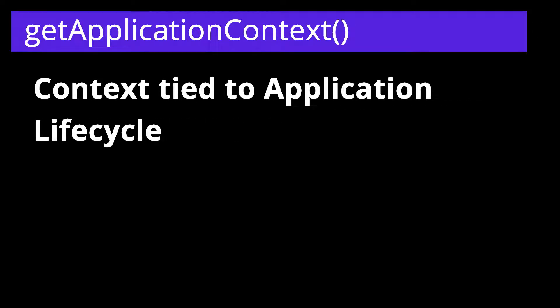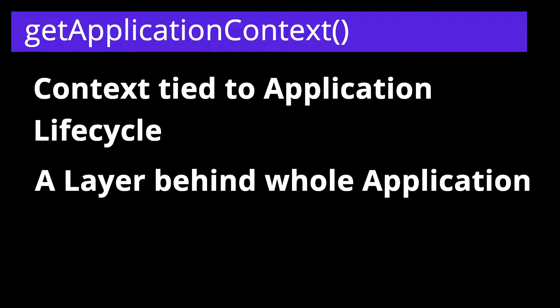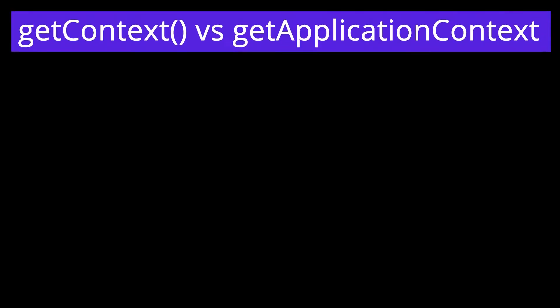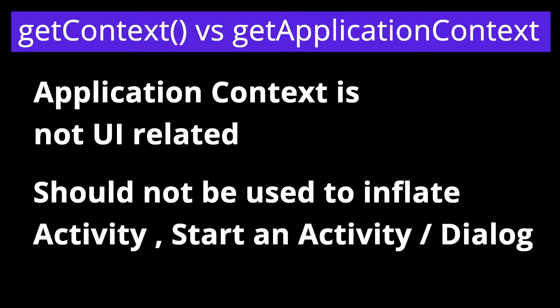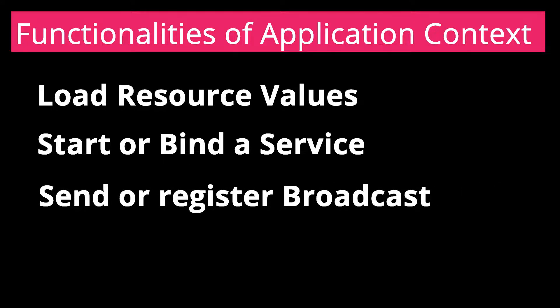In case of getApplicationContext, the context is tied to the application and its lifecycle. We can think of it as a layer behind the whole application — as long as the user doesn't kill the application, the context is also alive. The difference from getContext is that the application context is not UI related, meaning we shouldn't use it to inflate a layout, start an activity, or show a dialogue. The functionalities supported by application context are: loading a resource file, starting a service, binding to a service, sending a broadcast, and registering a broadcast receiver.